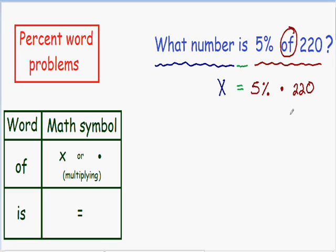So now we have rewrote this word problem into a mathematical equation. We have our number x is equal to 5% multiplied by 220. So this is a really easy equation to solve. The only thing we need to do to find x is just multiply 5% times 220.